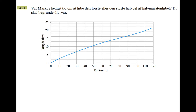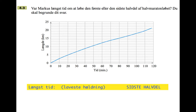Question 4.3: did Marcus take the longest time running the first or the second half of the half marathon? You need to give a reason for your answer. It's sufficient just to refer to the shape of the curve. For the first half the curve is steeper than for the second half, where it starts to flatten out — flattening out because over the same period of time he's running fewer kilometers. The longest time is the part of the curve with the lowest gradient, which is the last half.